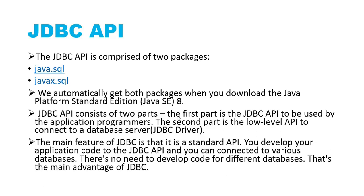This is the main feature of JDBC: because it is a standard API, you develop your application code using the JDBC API to connect to various databases without needing separate code for each database. JDBC is essentially an abstraction — you can plug in multiple implementations. If you want to connect to MySQL, use the MySQL JDBC driver; for Oracle, use the Oracle JDBC driver. When you provide a SQL statement to the JDBC driver, it passes the SQL to the database, allowing you to perform SELECT, INSERT, UPDATE, and DELETE operations.